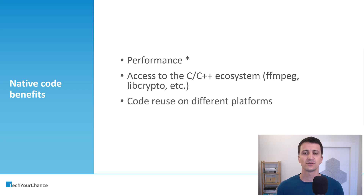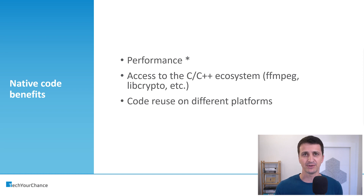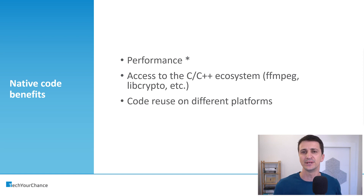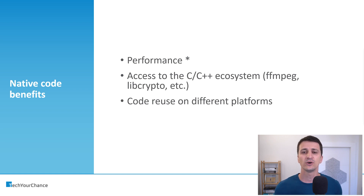Another benefit is that you can reuse code on different platforms. Native code is CPU specific — that's a drawback — but it's not framework or platform specific. Therefore, if you have Android and iOS applications that execute on the same CPU architecture, say ARM 64-bit, you can write and build native code that will execute for both Android and iOS applications the same way. You can share C++ code between Android and iOS projects in this manner, and this is actually being done in practice — it's not just theoretical. You can reuse code on different platforms as long as they target the same CPU architectures.